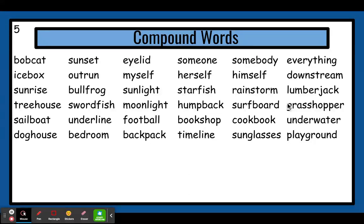Next word — first part: surf, second part: board. Put them together: surfboard. It is a board that you go surfing on. Next part, we have grass and hopper. Grasshopper. It's an insect that hops along in the grass, and we call that a grasshopper.